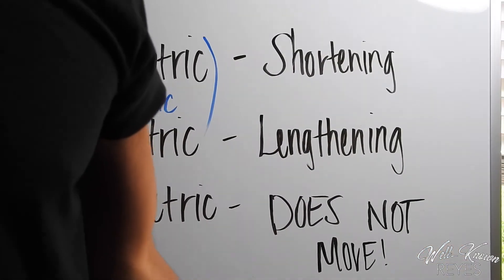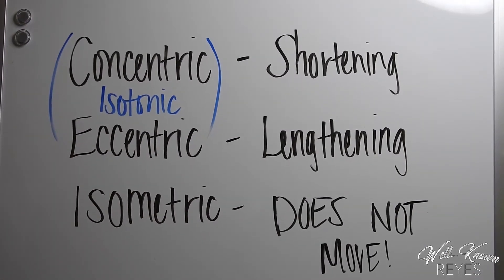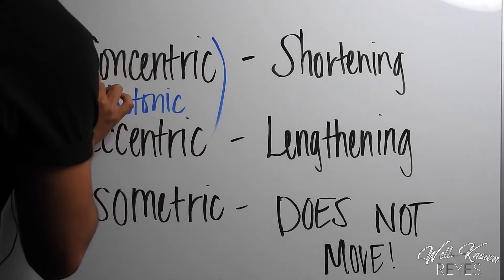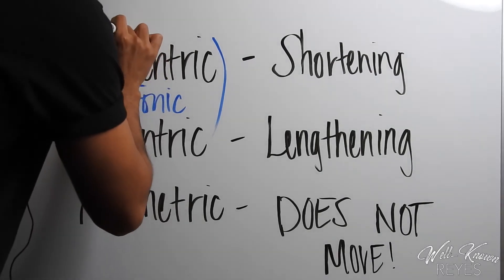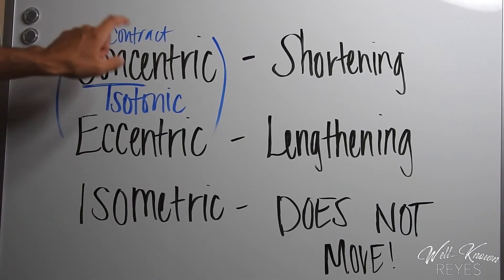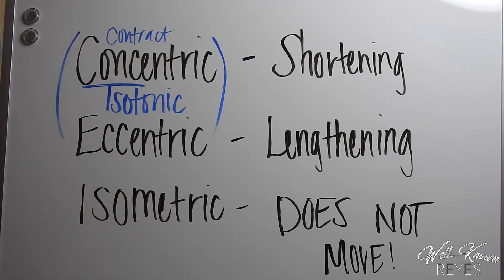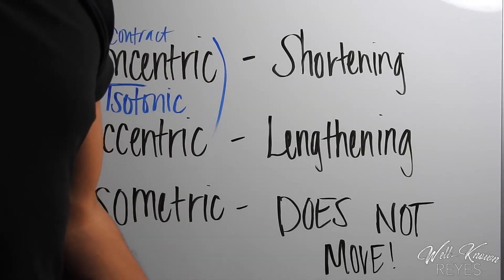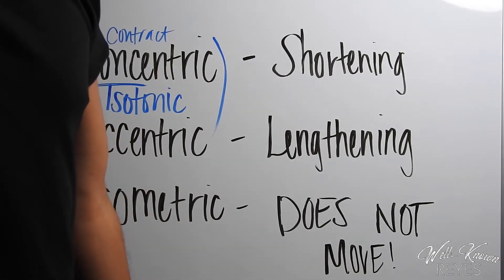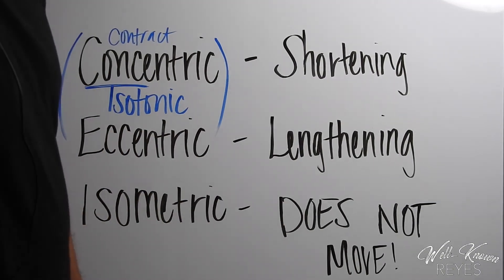Alright, now just a quick side note. If this helps, consent-contract, use it to remember that it shortens. Eccentric—here's another side note—sometimes you'll see someone in the gym and they'll go like this and then they'll go down and then do it again. Well, it's kind of defeating the purpose and I'll tell you why.